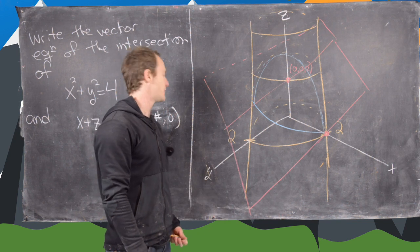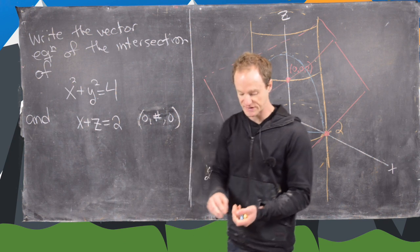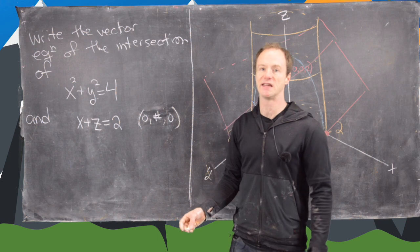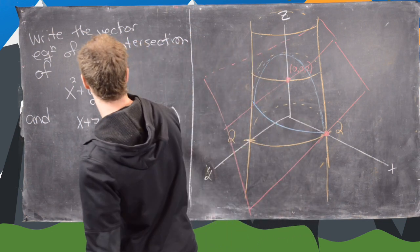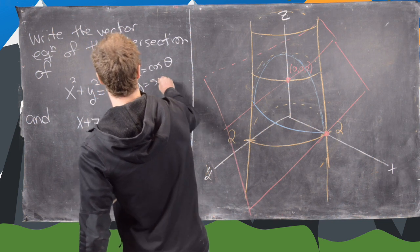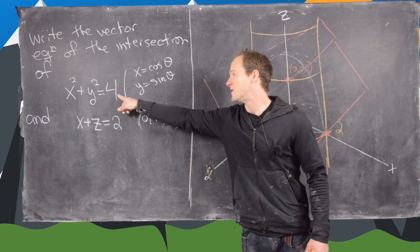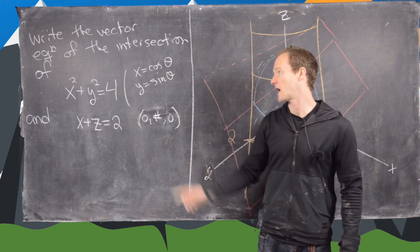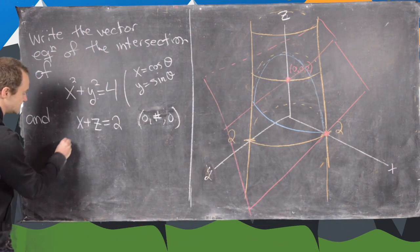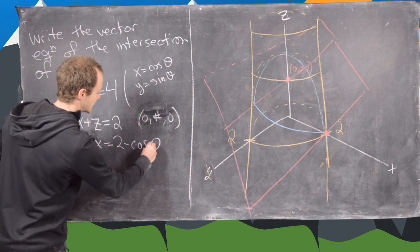So now that we have an idea of the picture, let's talk about how to find the equation here, which is actually not so bad. What we'll do is we'll first parametrize this with the following. Notice we can let x equal cosine theta and y equal sine theta and that's going to parametrize this circle.